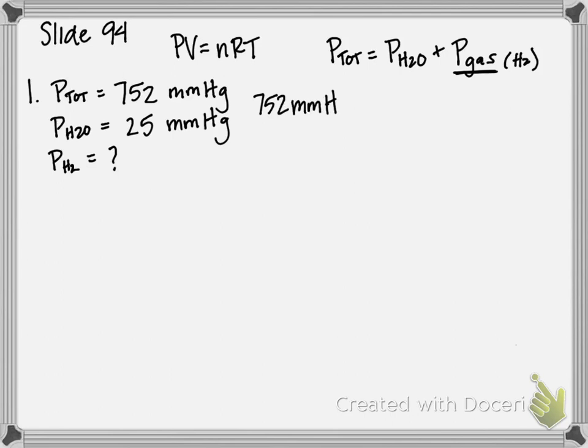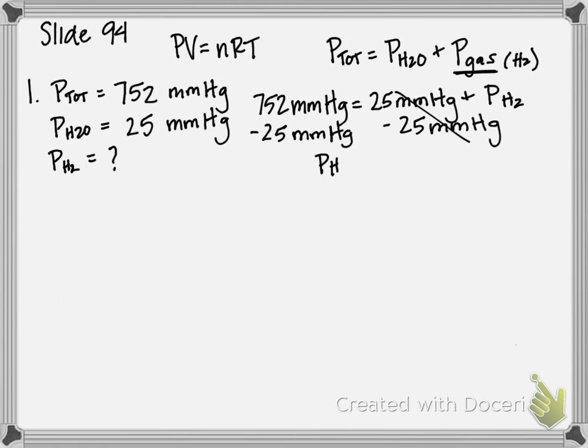752 millimeters of mercury, that's our total pressure, is equal to 25 millimeters of mercury plus the partial pressure of hydrogen. So I can subtract 25 millimeters of mercury from both sides to get my partial pressure of hydrogen is equal to 727 millimeters of mercury. So that's step one of our problem.